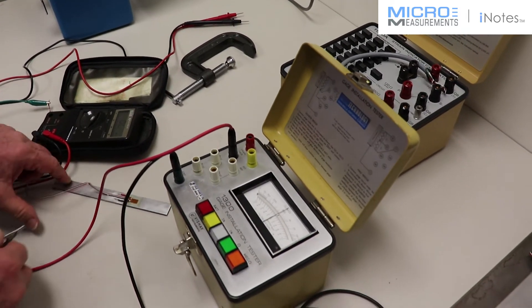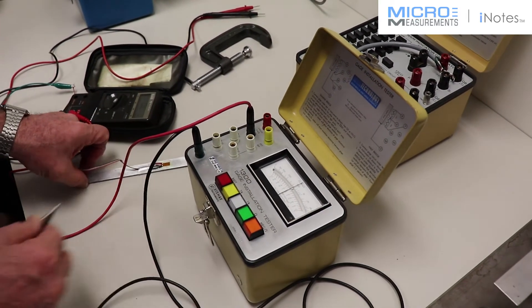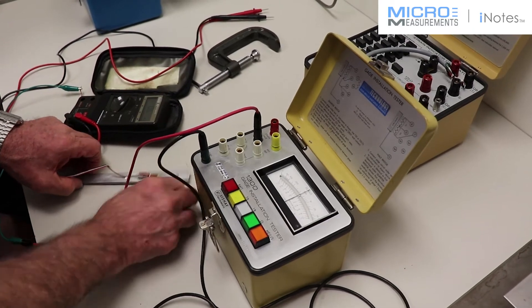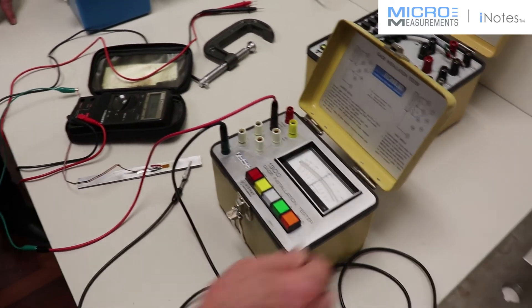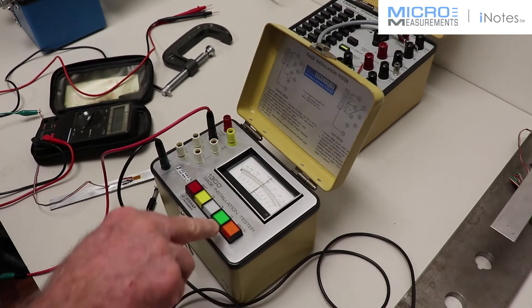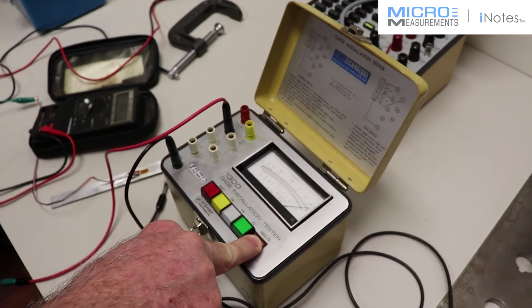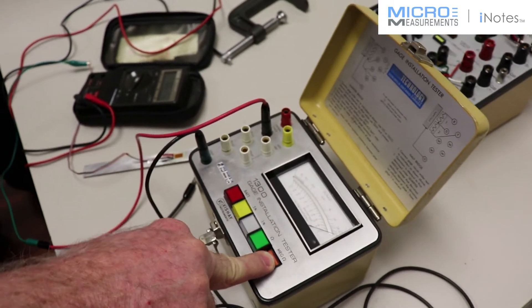And the other one, the ground lead, I'm going to attach to the base plate where the gauge is mounted. And all we have to do is press the button here. And we see that we are also off scale, which looks good.